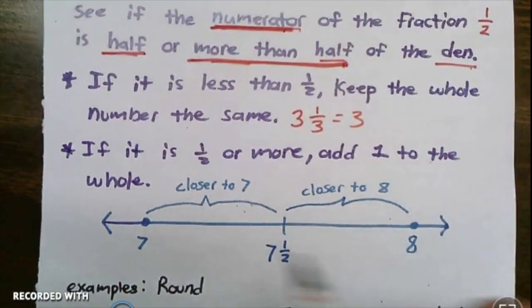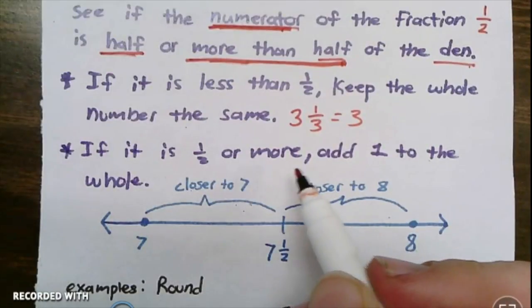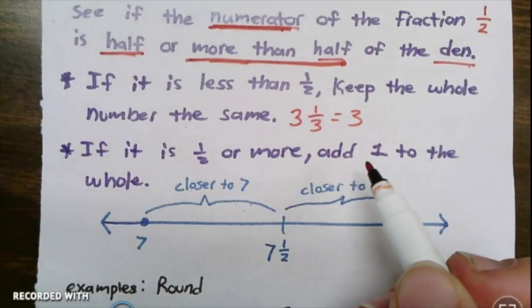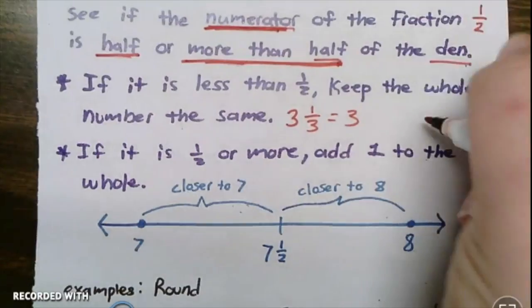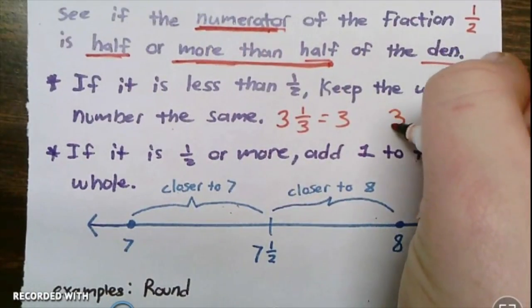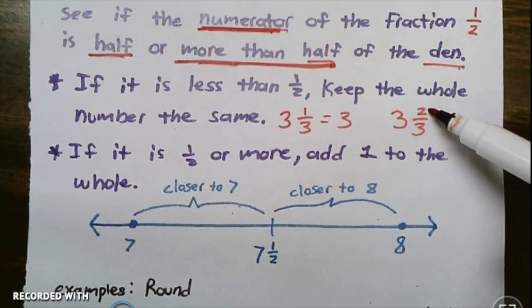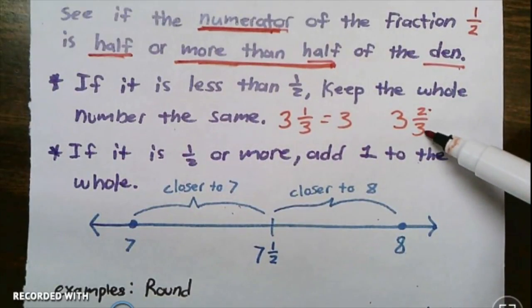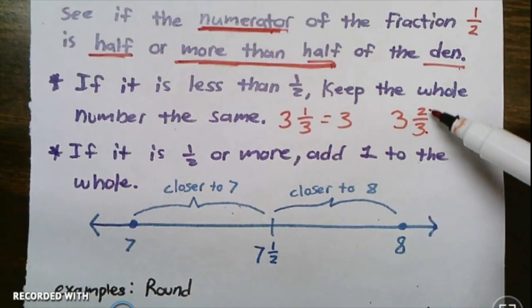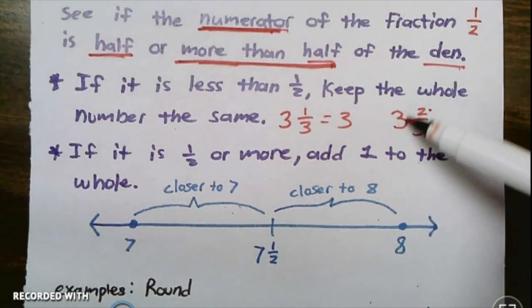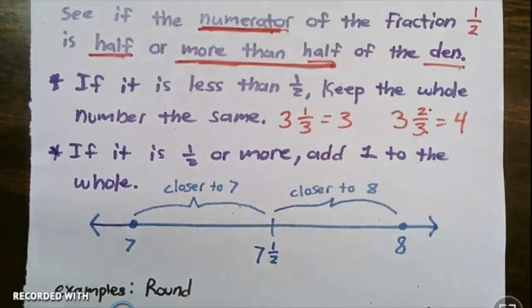But if it is half or more, you're going to add one whole to the whole. For example, if instead this was three and two-thirds, well because two is more than half of three, I'm going to round this up to one whole and I'm going to add a whole to this whole number, so my final answer will be four.